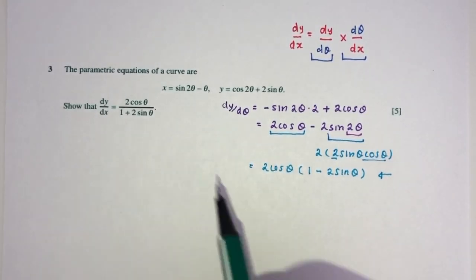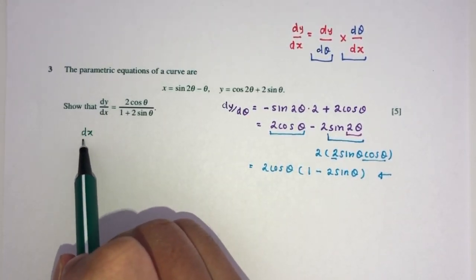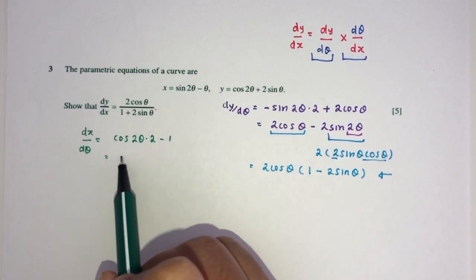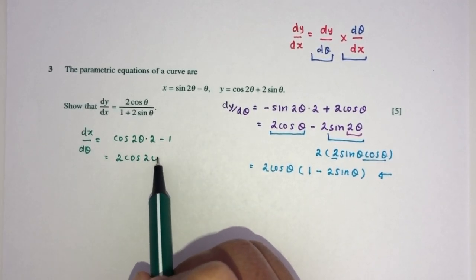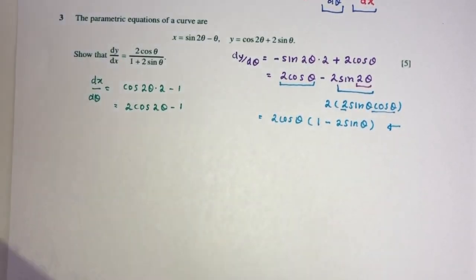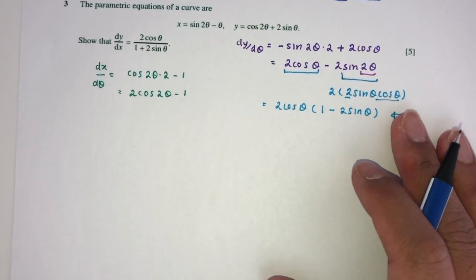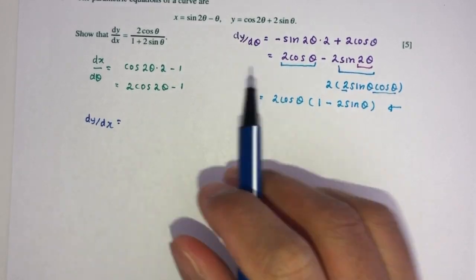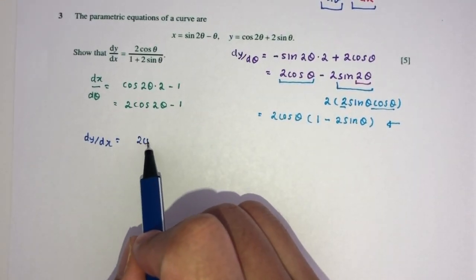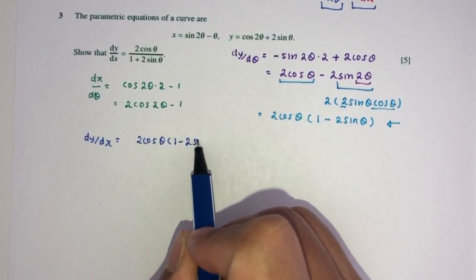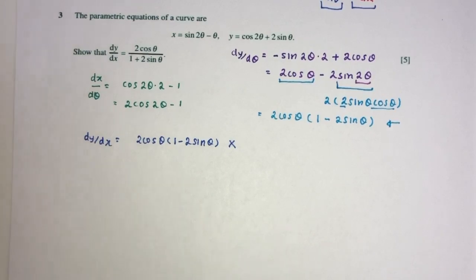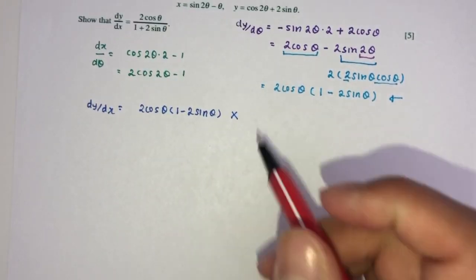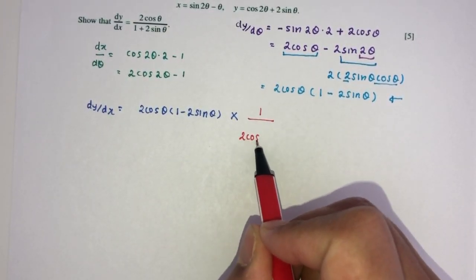Now let's find dx by d theta. So dx by d theta will be what? That will be cos of 2 theta times 2 minus 1, which is 2 cos 2 theta minus 1. We will have to expand this, but first let's replace back in our main formula. We understand that dy by dx has to be dy by d theta, which is this first one, 2 cos theta times 1 minus 2 sine theta. Send this. Multiply by d theta by dx. Here we have dx by d theta. This will have to flip this upside down. Then it will become 1 over 2 cos 2 theta minus 1.